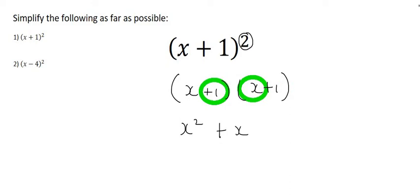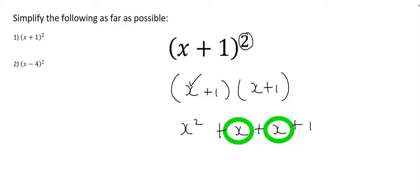Now we've used this x, so we start with the positive one and multiply it with x to get x, then one times one which is one. Then we look for like terms. We have x squared, and in front of each x there's a one, so one x plus one x is two x plus one.